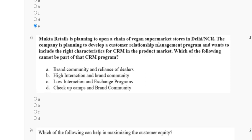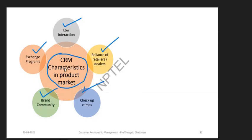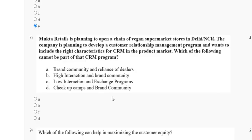Question 8: Mutala Retails is planning to open a chain of Vision Market superstore in Delhi/NCR and wants to include the right CRM characteristics in the product market. Which of the following cannot be part of the CRM program? Options include: brand community and reliance of dealers; high interaction and brand community; low interest interaction and exchange program; check-up camp and brand community. CRM characteristics in a product market include reliance of retailers or dealers, check-up camps, brand community, exchange programs, and low interaction. The correct answer is option B: high interaction and brand community.